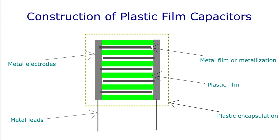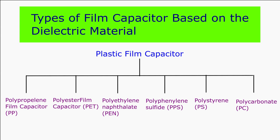Film capacitors are non-polarized and are built for different capacitance values and power ratings. The different types of plastic film dielectric capacitors are polypropylene, polyester, polyethylene terephthalate, polyphenylene sulfide, polystyrene, etc. Polypropylene film capacitors are specifically used for their low electrical losses and their linear behavior over a wide frequency range and stability for class 1 applications in resonance circuits. Polyester film capacitors offer low-cost solutions in high-frequency filter circuits with excellent long-term stability.